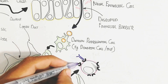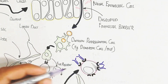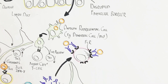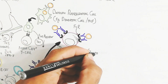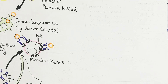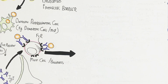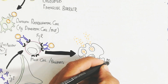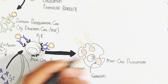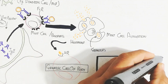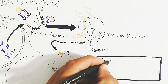The mast cells contain an Fc receptor that binds the Fc portion of the IgE antibody, forming a receptor-antibody complex on the mast cell surface. When an allergen such as pollen binds to this IgE-mast cell complex, it triggers degranulation via a cascade of intracellular phosphorylation events through secondary signaling messengers, releasing stored mediators.